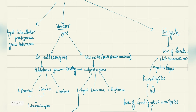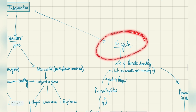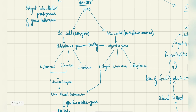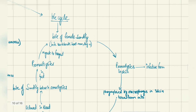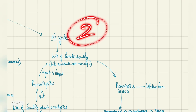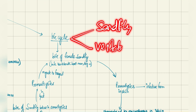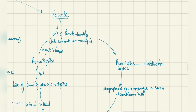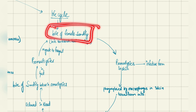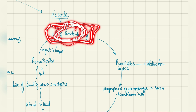Now let's go to the life cycle — how the protozoan circulates between its two main hosts: the sandfly and the vertebrate host. The vertebrate host can be man, dog, or others. The spread to the vertebrate host occurs by the bite of the female sandfly; it is usually the female sandfly that spreads the infection.